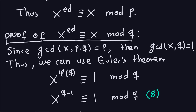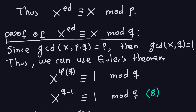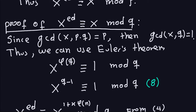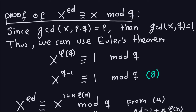Since GCD(x, q) equals 1, Euler's theorem says x^(φ(q)) ≡ 1 mod q. And φ(q) equals q minus 1, because q is prime — every number less than q is relatively prime to it. So replacing φ(q) by q minus 1, we get x^(q-1) ≡ 1 mod q. I'll call this equation 8.